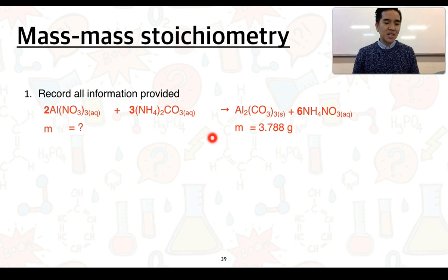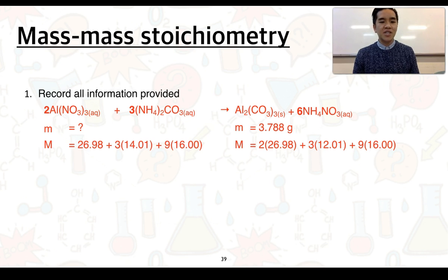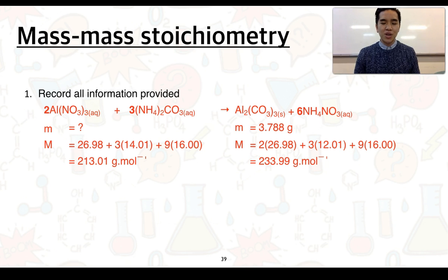Because we've got masses expressed here, it makes sense that we then want to calculate the molar mass in order to then work out the number of moles. The molar masses of our unknown and known are given as such, and I'll just get you to do a check and just make sure that this is right. We get molar masses of 213.01 and 233.99 grams per mole respectively.